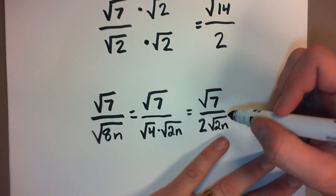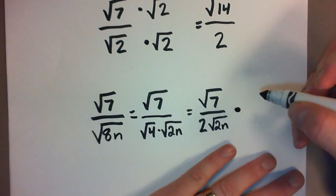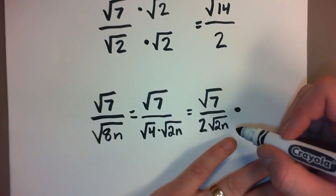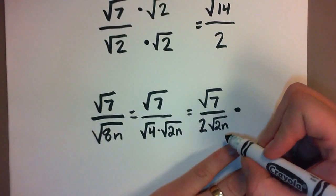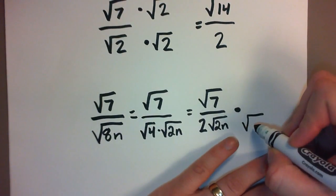But now when we rationalize the denominator, we'll end up with something we don't have to simplify as a fraction quite so much. So we're going to multiply the top and the bottom by what I want to get rid of—this square root—which means I'm going to multiply by that, the same thing: the square root of 2n.